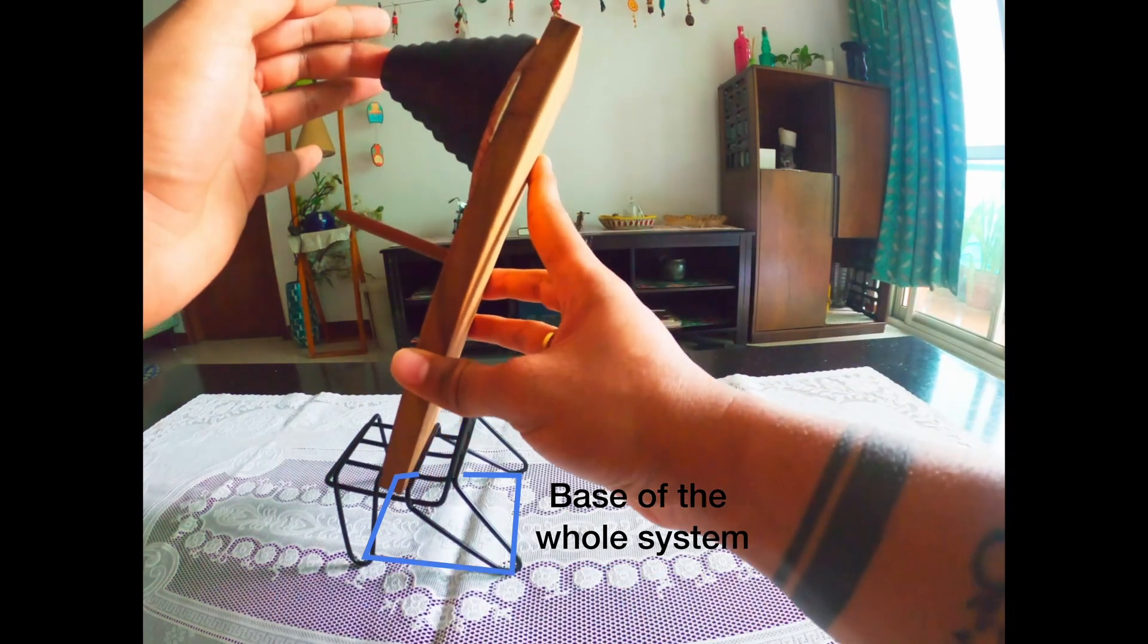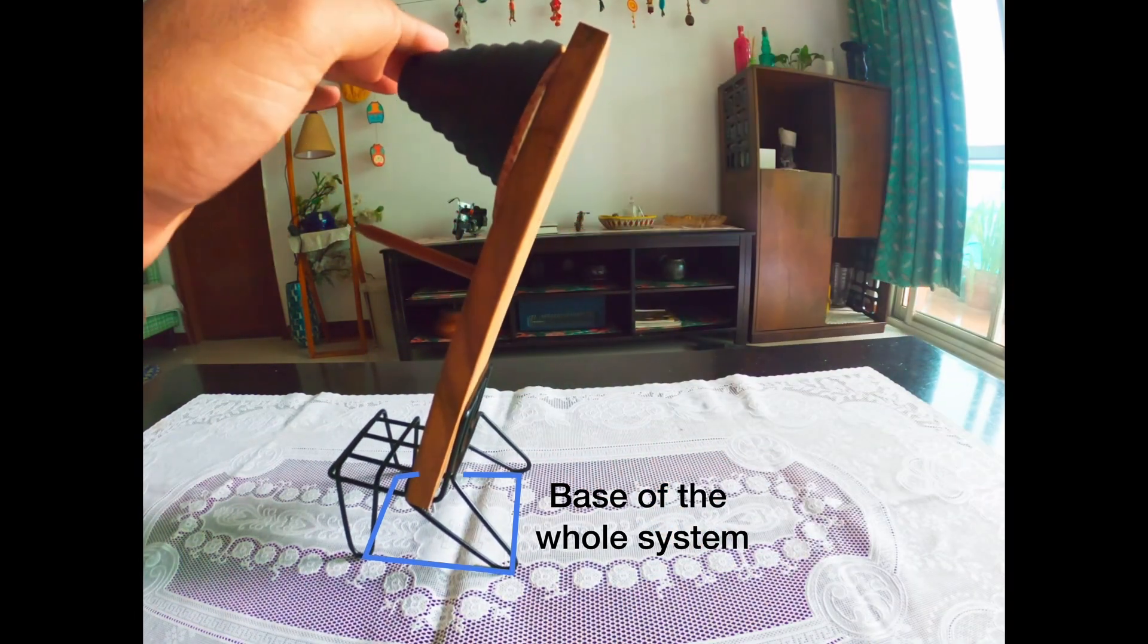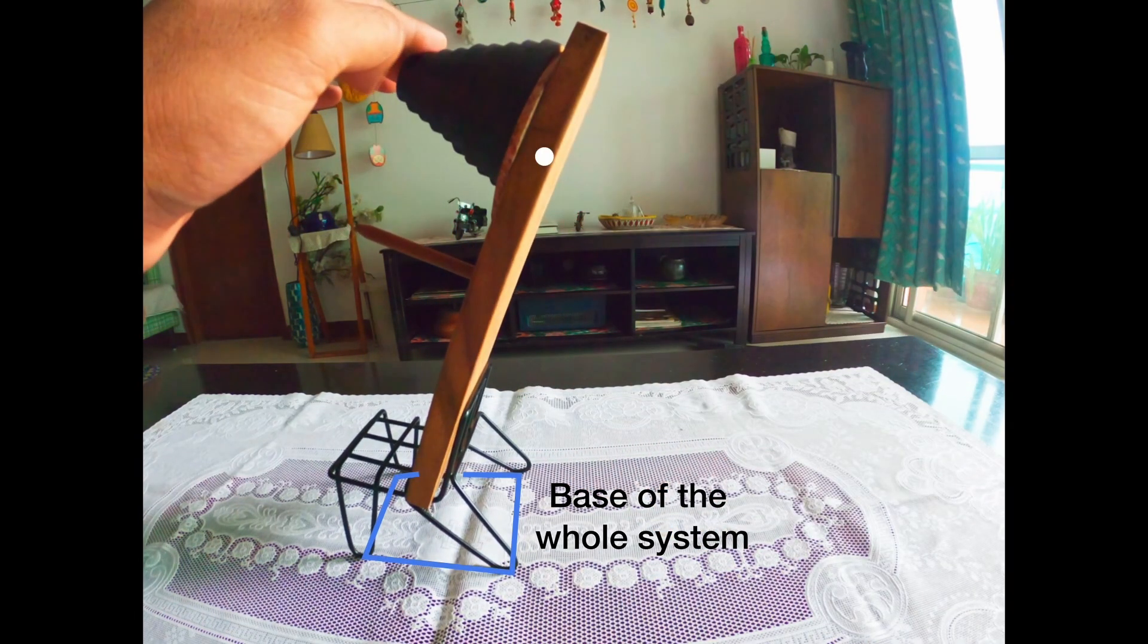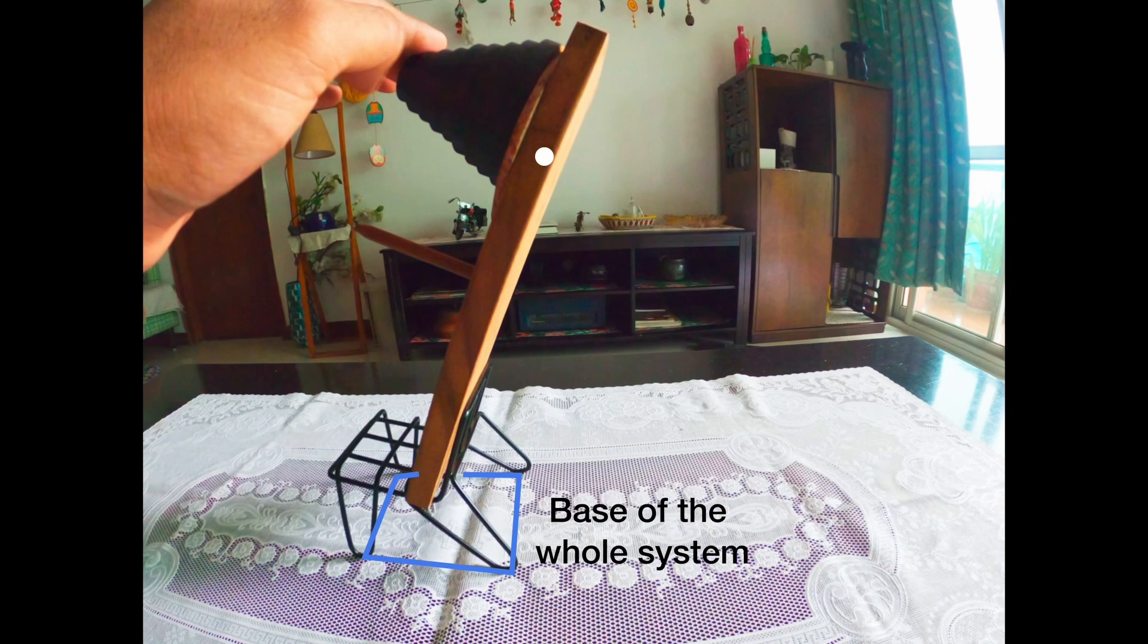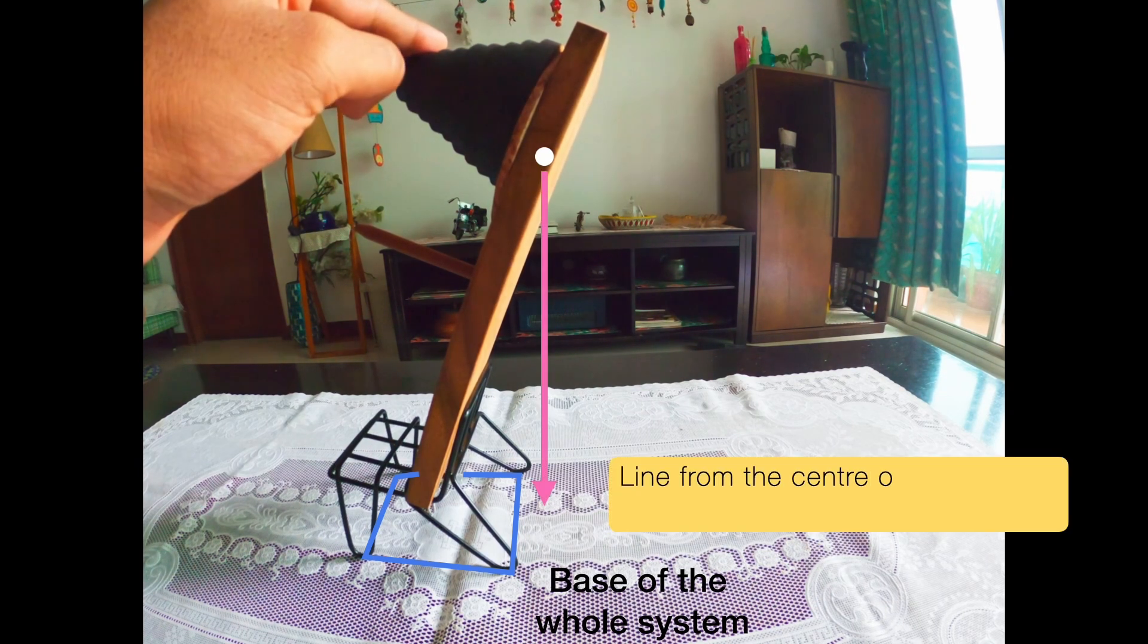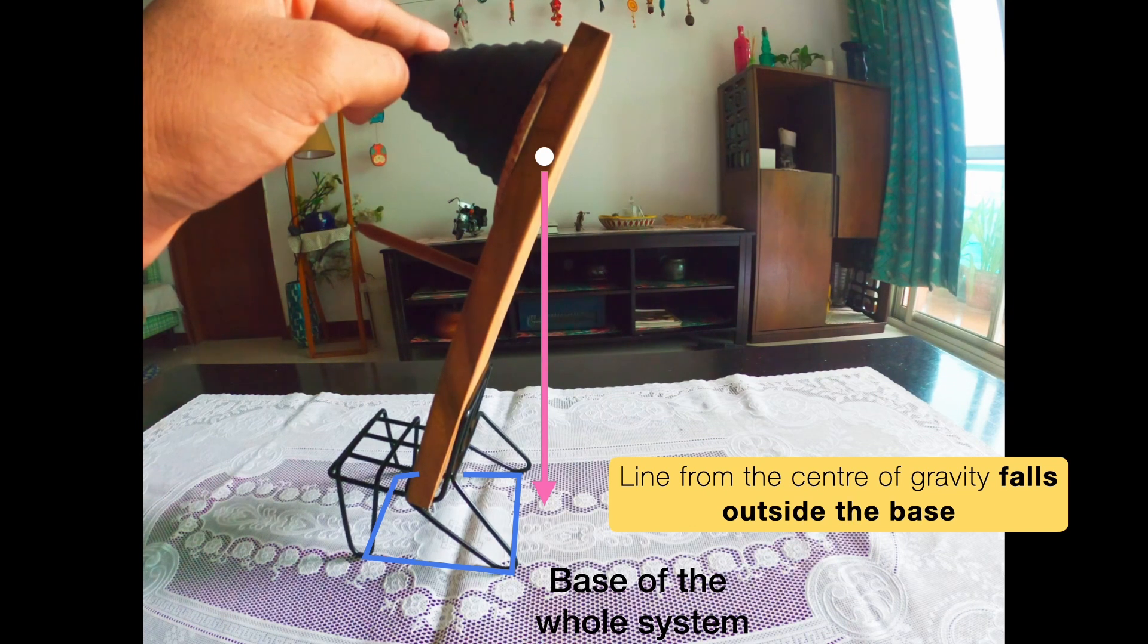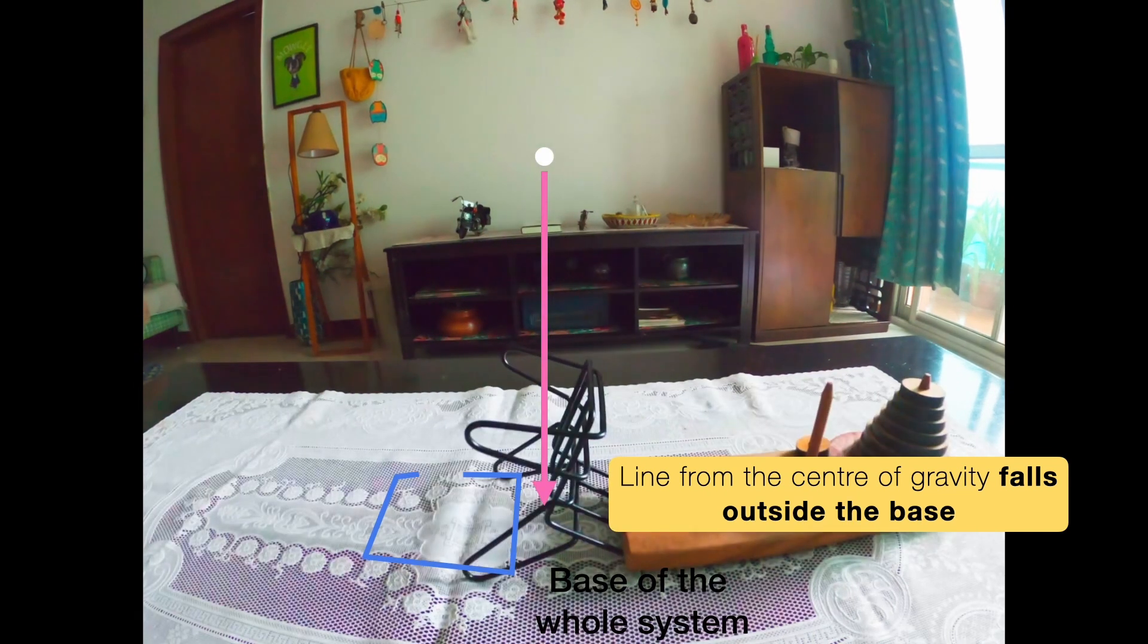But when we change the orientation, here is where it gets interesting. The center of gravity shifted - it's now positioned higher for the whole object, and the vertical line from it falls outside the base. And what happens? The object becomes unstable and topples. So yes, even though the weight hasn't changed and the mass hasn't changed, the position of the center of gravity has changed, and that's the real reason it falls in the second case.